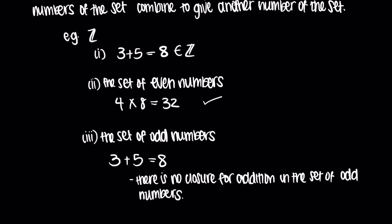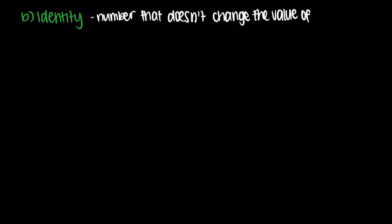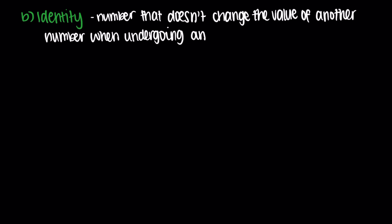The second property we'll be looking at is identity. An identity is a number that doesn't change the value of another number when undergoing an operation. For example, let's consider the number 5. We need a number that when added to 5 doesn't change its value, so we'd receive 5. We know that 5 plus 0 is equal to 5, which means that 0 is the identity for addition since it doesn't change the value of the number 5 when we add the numbers.